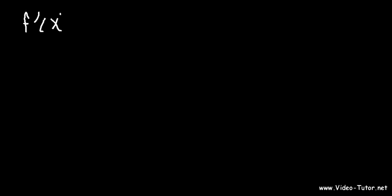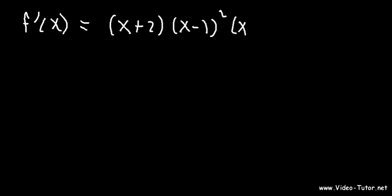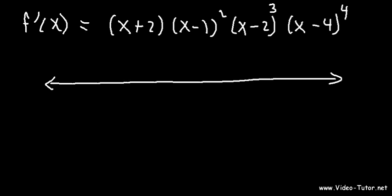Now I want to show you something else. Let's say you find your first derivative and you get something that looks like this: (x + 2)(x − 1) squared times (x − 2) cubed times (x − 4) to the 4th power. You make your sign chart with the values negative 2, 1, 2, and 4. There's a quick and easy way to find what the signs are — once you know what the first one is, you can use the exponents, the multiplicity, which is the exponent of each factor, to know what the sign will be without even having to plug in the number.